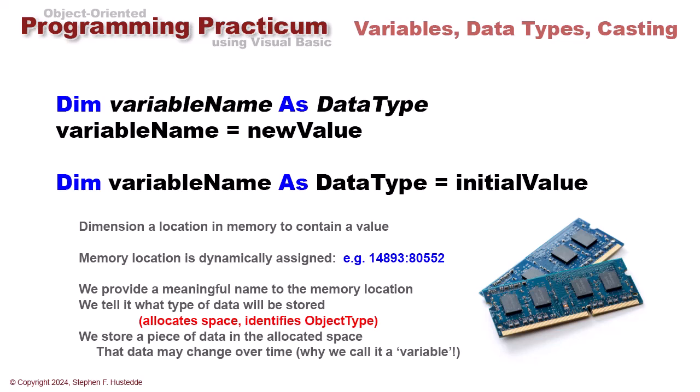When we're calling a double variable name, we're declaring a container that's an instance of the double class. Remember, classes have properties, methods, and events, so all the properties and methods associated with that data class are available to our variable. In that allocated space we store our data, and that data may change over time—that's why we call it a variable. It varies, as opposed to a constant which never changes.